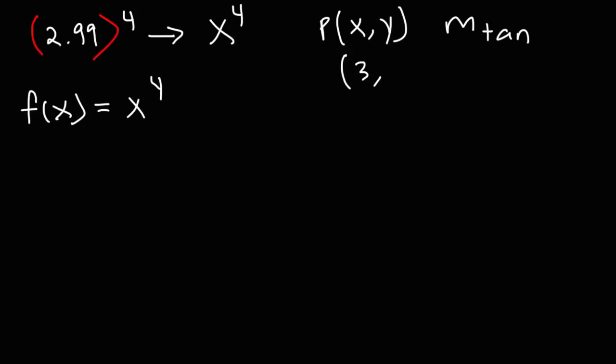Now we need to get y and the slope of the tangent line. f of x is equal to y. So y is going to be f of x when x is 3 and so that's going to be 3 to the fourth power. 3 to the fourth power is equivalent to multiplying four threes. 3 times 3 is 9. 9 times 9 is 81. So now we have our y value which is 81.